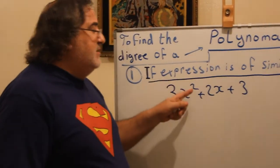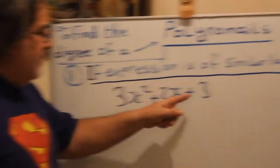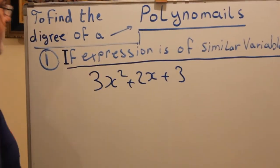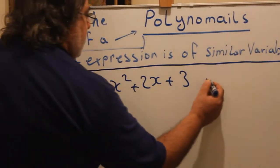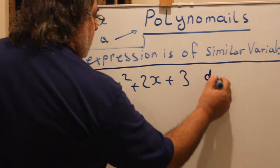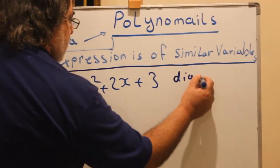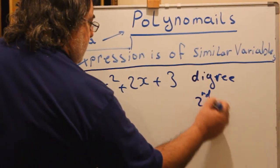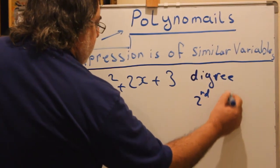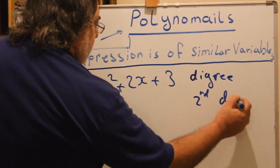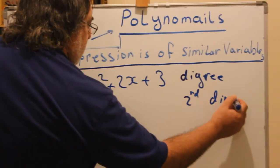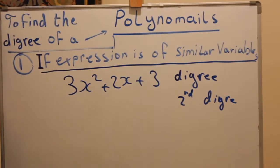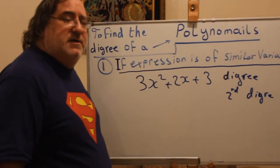So look to the highest power of that variable. The highest power of x is 2. So the degree is second degree, or degree 2.